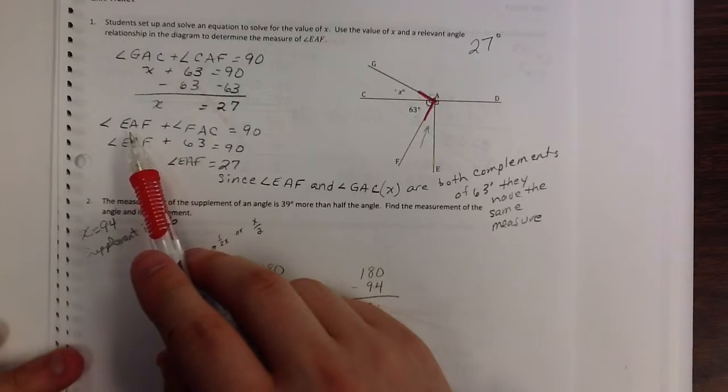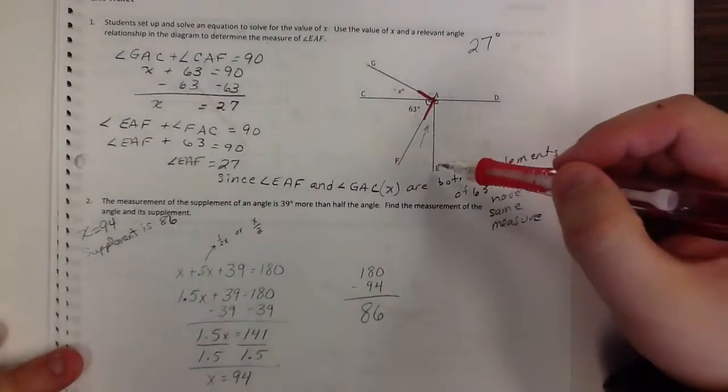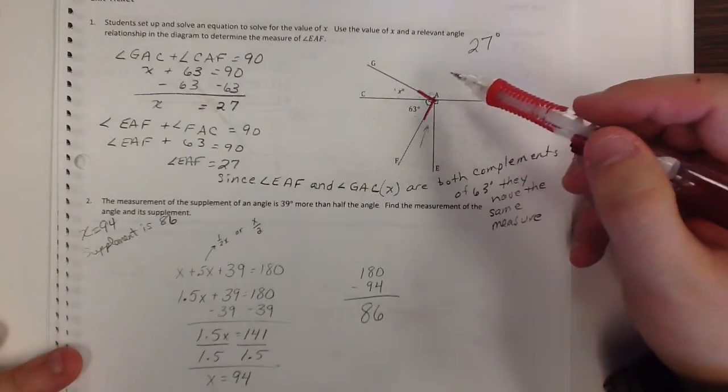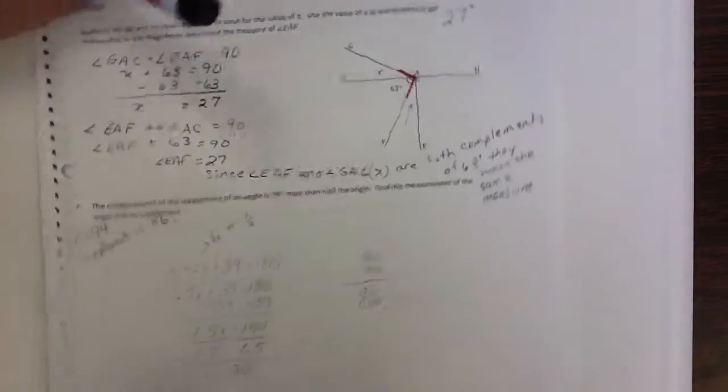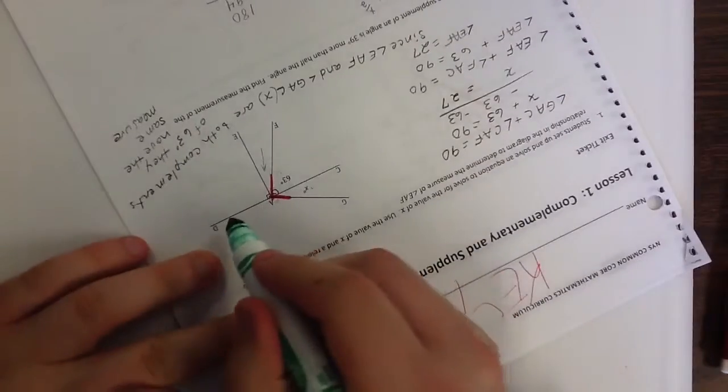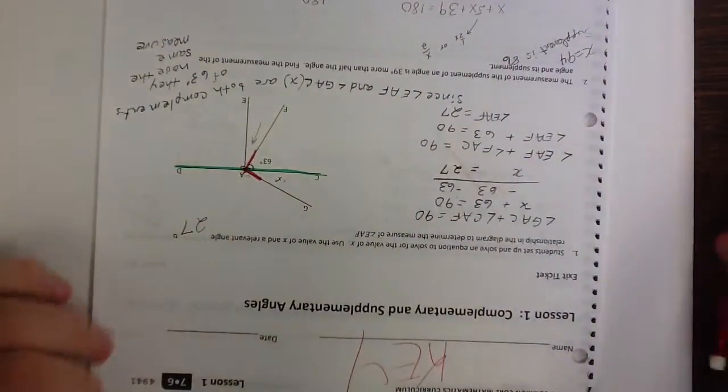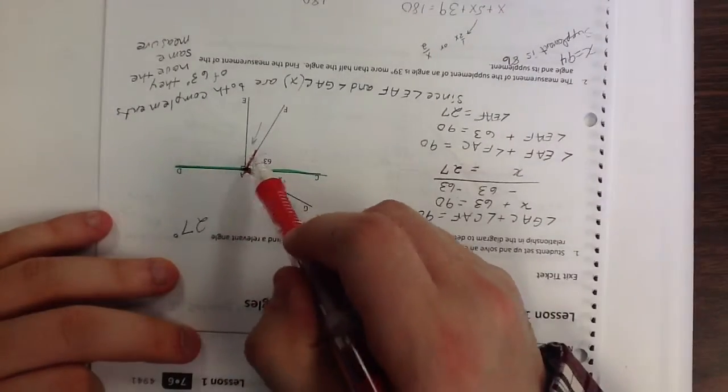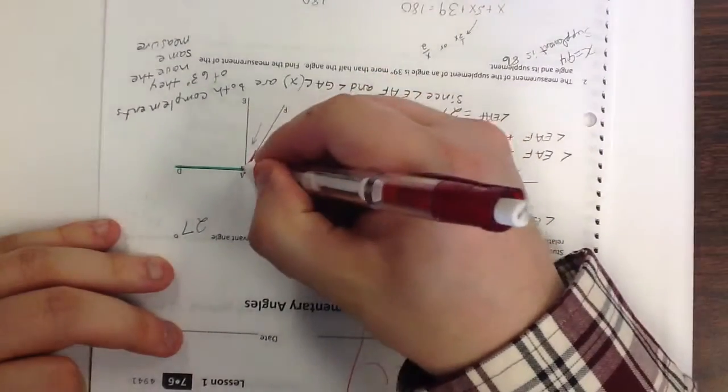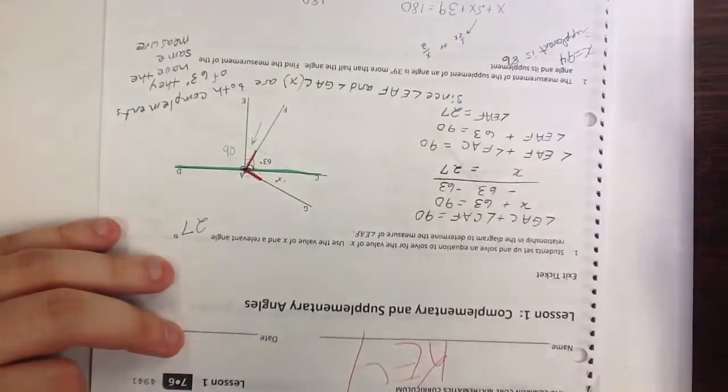Then I can say angle EAF and angle FAC, okay, EAF, this one, and angle EAC also equal 90 degrees because if I flip this upside down here, okay, this is a straight line here. That'd be 180 degrees, all the angles. So this angle plus this angle plus this angle equals 180 degrees. Well, I know that this angle right here is 90 degrees. Therefore, this angle must be 90 degrees.